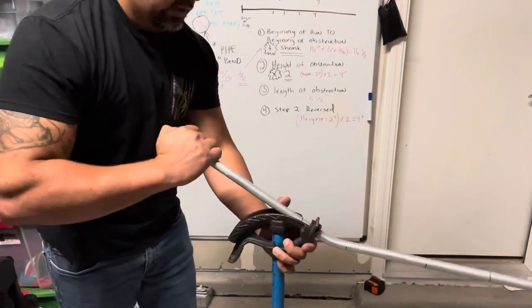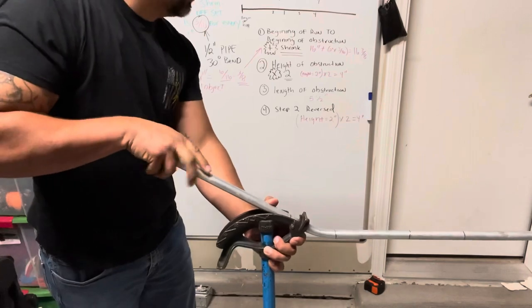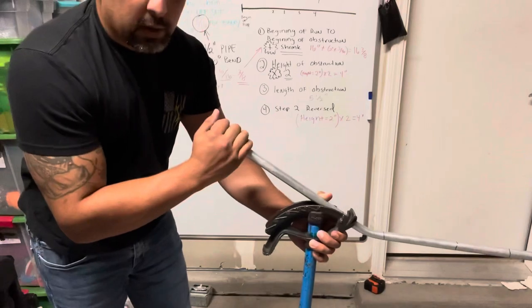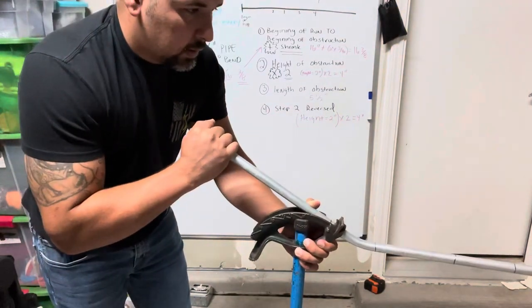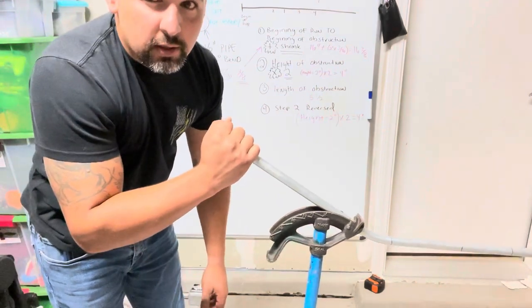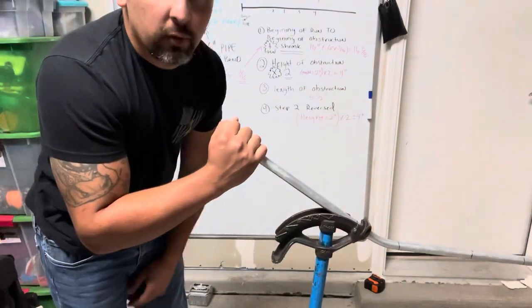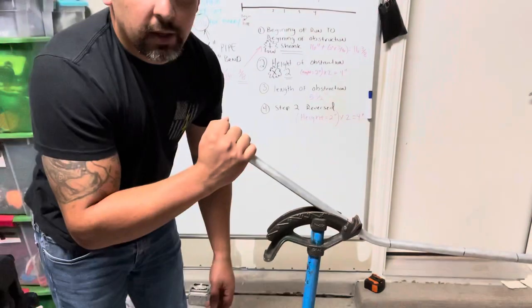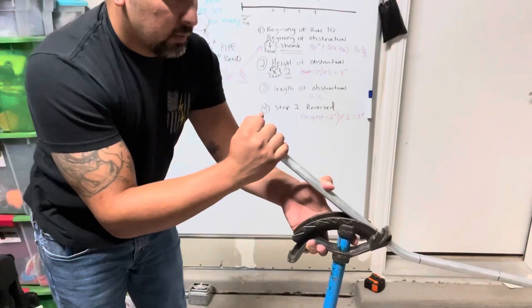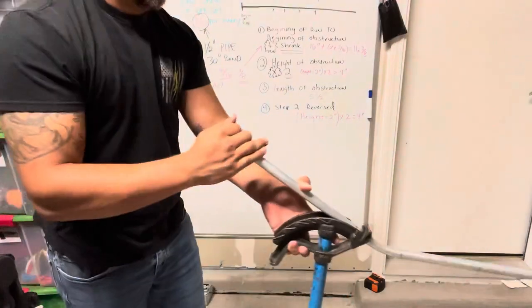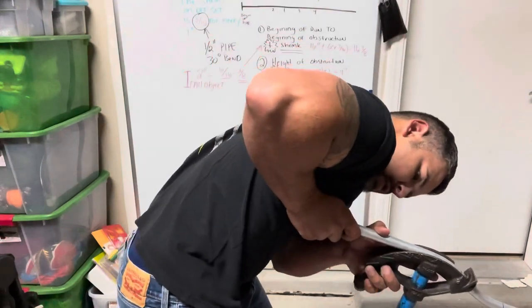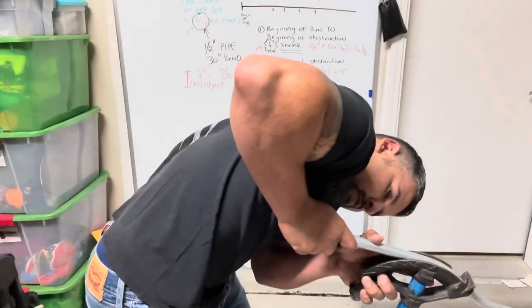Do the second bend or the second point. I'm going to eyeball it. You can get those little levels that have the dog leg protector, but I've been doing this for a little bit so you can kind of eyeball it. So then we'll do this one at 30.